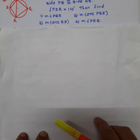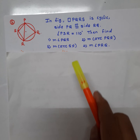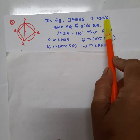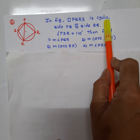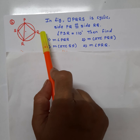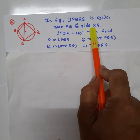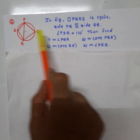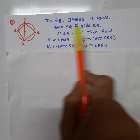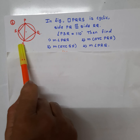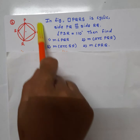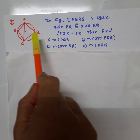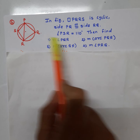In the figure, quadrilateral PQRS is a cyclic quadrilateral. Side PQ and side RQ are congruent. Angle PSR is 110 degrees. Find angle PQR, arc PQR, arc QR, and angle PRQ.